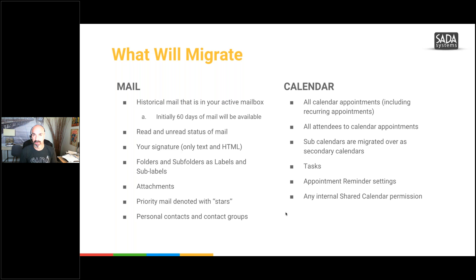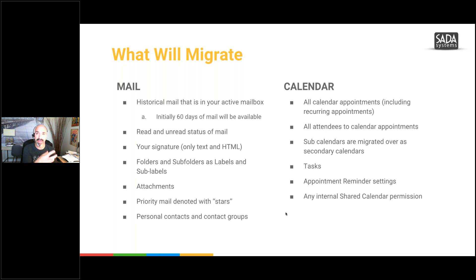Folders and subfolders are labels and sublabels now. Attachments over 25 megabytes will not migrate — they'll go right into your Drive. So if you have anything in your email that is that big, it's just going to go automatically into your Drive as a file. Priority mail will be denoted with stars, and I'll show you stars today — how you can use them to enhance your Gmail account.